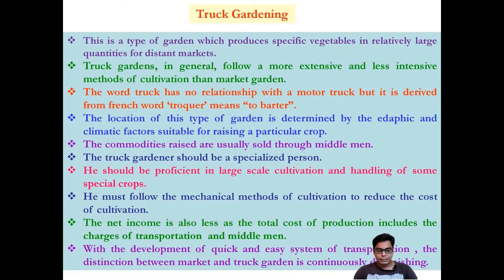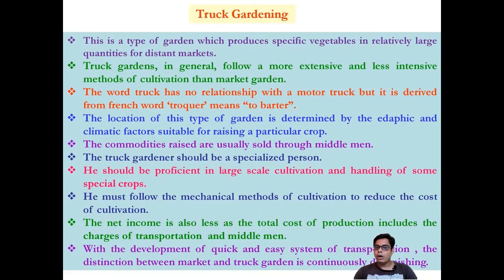Market gardening is practiced in states like Jammu and Kashmir, Uttarakhand, Sikkim, and Assam. These hill areas are famous for market gardening, flowers, fruits, and nuts. The Garhwal region of Uttarakhand produces apricot, apple, strawberry, almonds, and walnuts. Thank you for watching this video on the agriculture chapter.